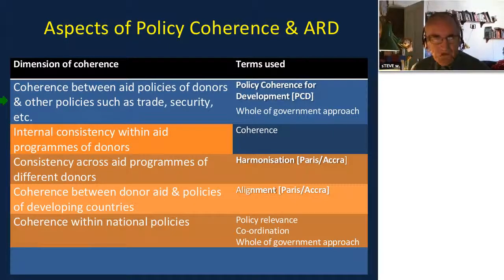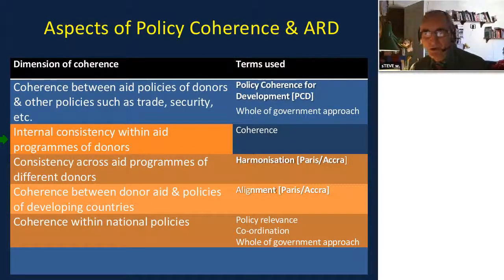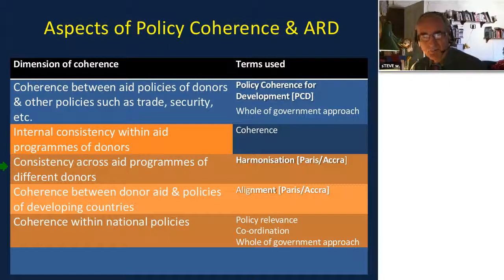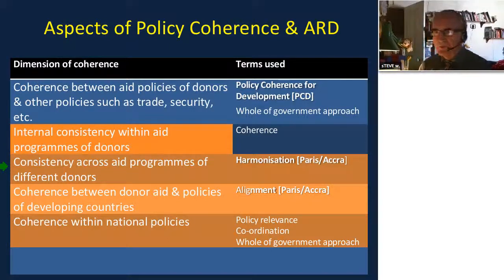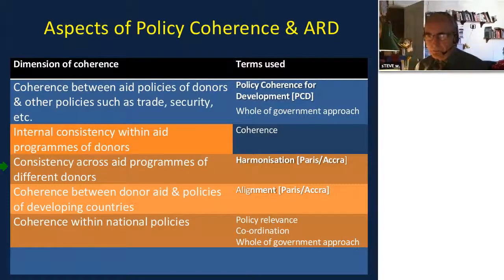There are other things to do with policy consistency. There's the internal consistency within aid programs of donors — a major interest being coherence between humanitarian relief and development efforts. Then there is the consistency across the aid programs of different development partners, which is the area dealt with by the principle of harmonization from the Paris Principles for Aid Effectiveness.